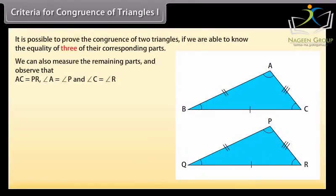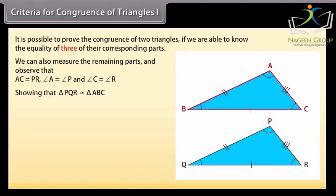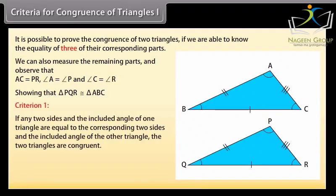Alternatively, we can also measure the remaining parts and observe that AC is equal to PR, angle A is equal to angle P, and angle C is equal to angle R, showing that triangle PQR is congruent to triangle ABC. This means that equality of these three corresponding parts results in congruent triangles. Thus, we have Criterion 1: if any two sides and the included angle of one triangle are equal to the corresponding two sides and the included angle of the other triangle, the two triangles are congruent. This criterion is referred to as SAS — side angle side rule.